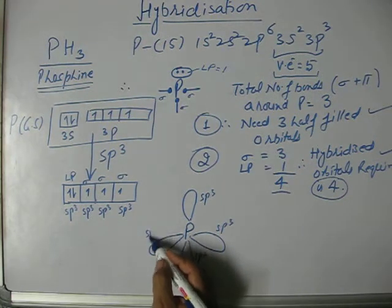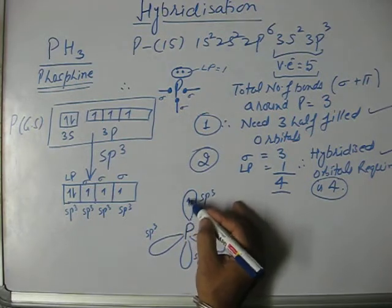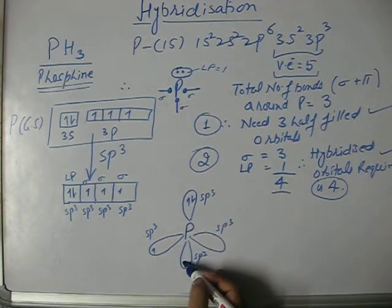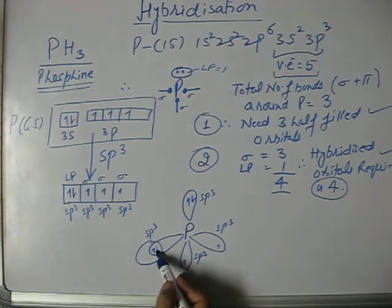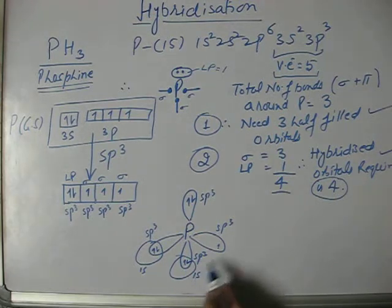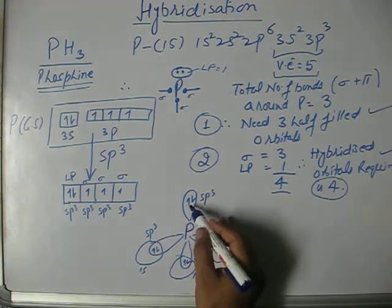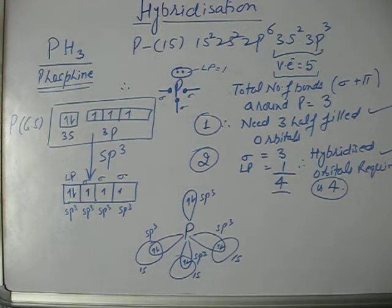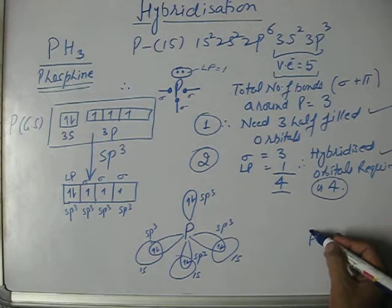One sp3 orbital will carry the lone pair and other three will be half filled. These half filled orbitals will be used to form sigma bonds with the overlapping of 1s orbitals of hydrogen. This explains bonding with hydrogen.